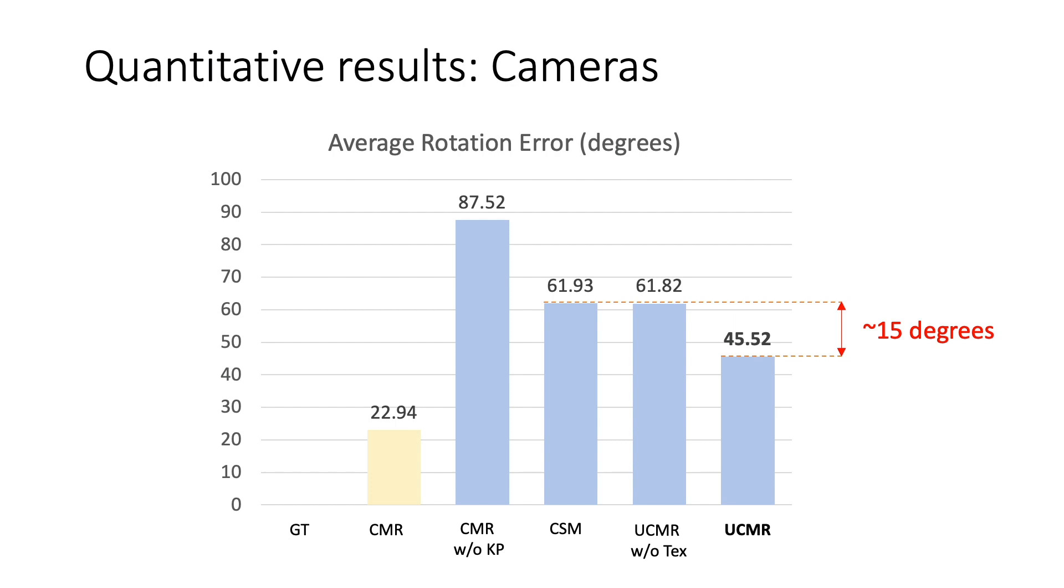This plot also shows that texture is critical to finding good camera poses as silhouettes alone cannot disambiguate certain camera poses. UCMR trained without texture performs poorly, achieving an error that's 15% higher.